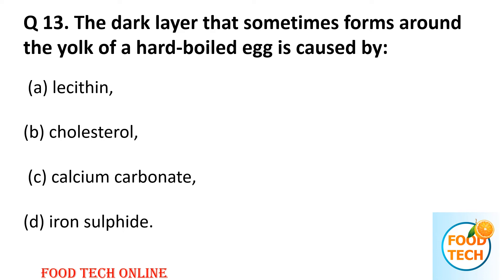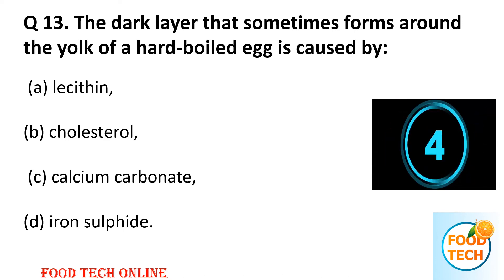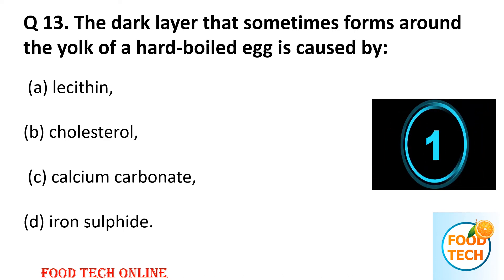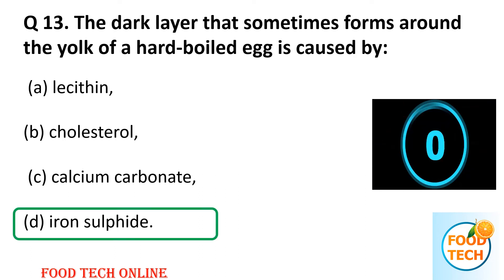Question 13: The dark layer that sometimes forms around the yolk of hard-boiled eggs is caused by: A: lecithin, B: cholesterol, C: calcium carbonate, D: iron sulfide. Answer: D, iron sulfide.